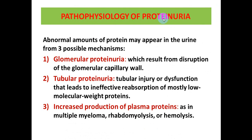Pathophysiology of proteinuria: Abnormal amounts of protein appearing in the urine may result from three possible mechanisms. Number one: glomerular proteinuria. Number two: tubular proteinuria. And number three: increased production of plasma proteins.